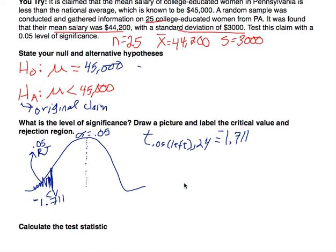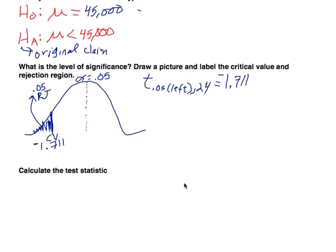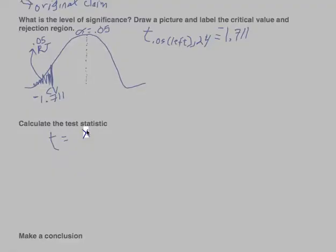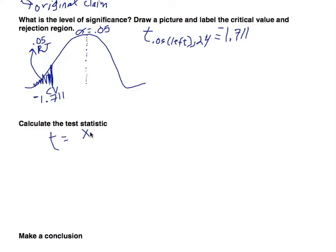Let's calculate the test statistic. The formula for the t-test statistic is always good to have on your formula sheet: it's the sample mean minus the hypothesized mu, divided by the sample standard deviation divided by the square root of n.